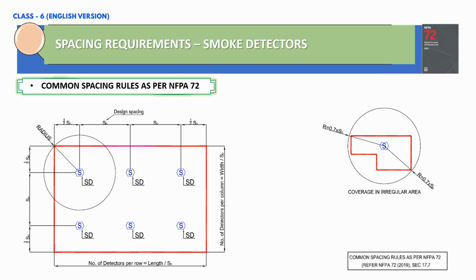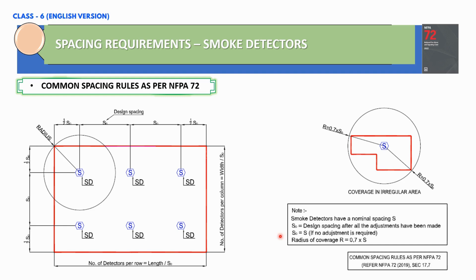As per NFPA 72, the smoke detectors have a nominal spacing. In the case of heat detectors, they have a listed spacing. This nominal spacing can be equal to the design spacing if there is no adjustment. The radius coverage for one smoke detector is given as 0.7 times the design spacing.